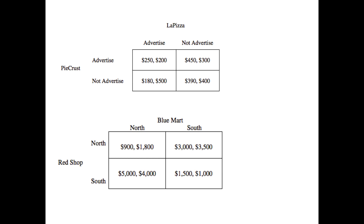Most of the time in AP Microeconomics, you're faced with a two-by-two game in which you'll have two players as well as two payoffs to consider. Once you look at this, you want to think about which one is player one's actions and which one is player two's actions. The player on the left-hand side is player one, and the player at the top is player two. The first number in these respective boxes is player one, and the second number is player two.